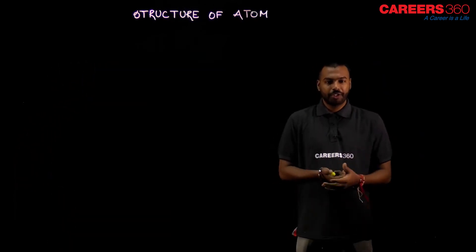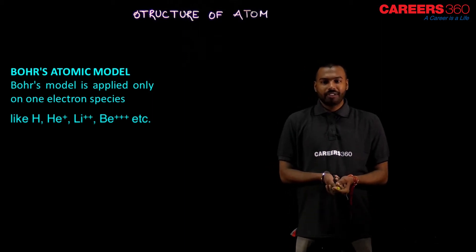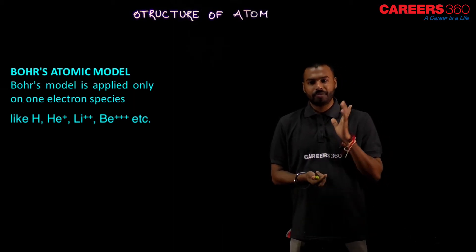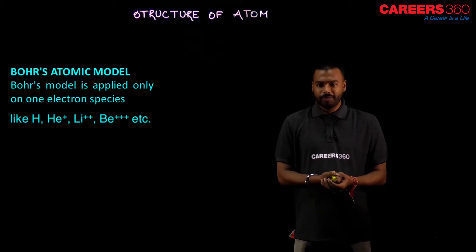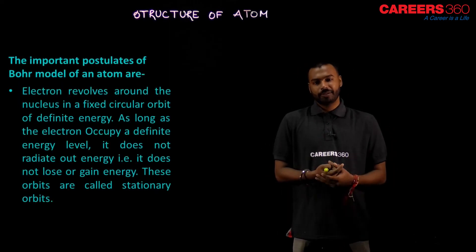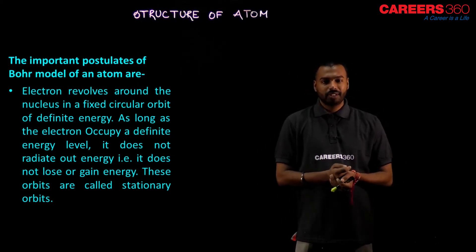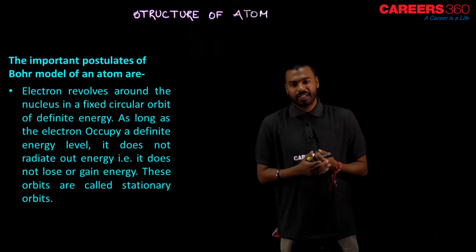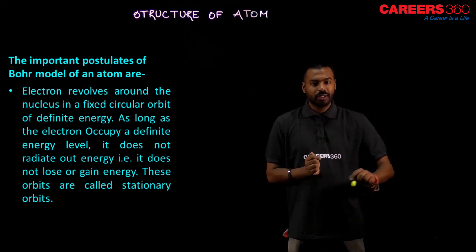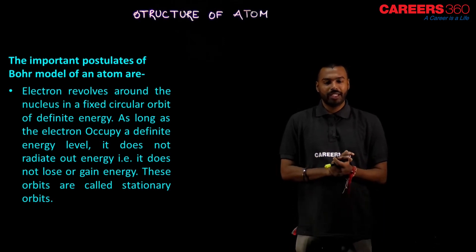Now I'm going to display a slide. The first point: Bohr's model is applied only on one-electron species — it is only applicable for uni-electronic species, like hydrogen, He⁺, Li²⁺, Be³⁺, etc. The next point on the slide: electron revolves around the nucleus in a fixed circular orbit. Bohr says the electron is not radiating or emitting any energy while revolving in his circular orbit — this is what he improved over Rutherford's atomic model.